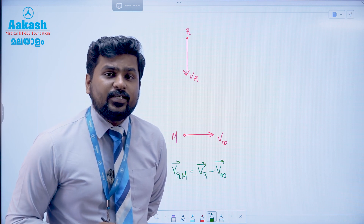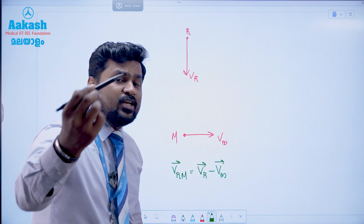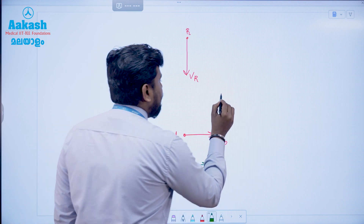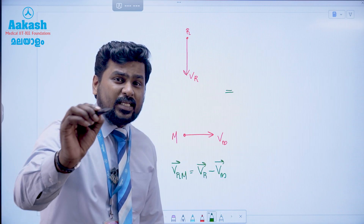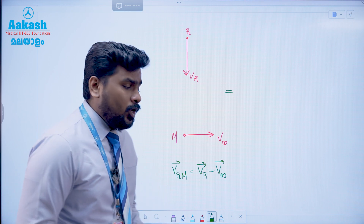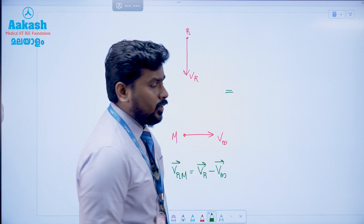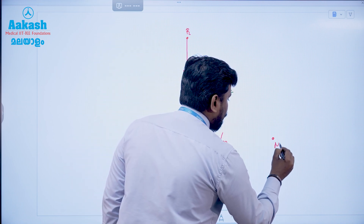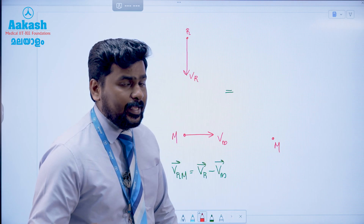How do we subtract this? Either negative vector addition or vector subtraction. So I am going to find the relative velocity of rain with respect to man. Man is the observer. The observer sees the velocity of the raindrop.